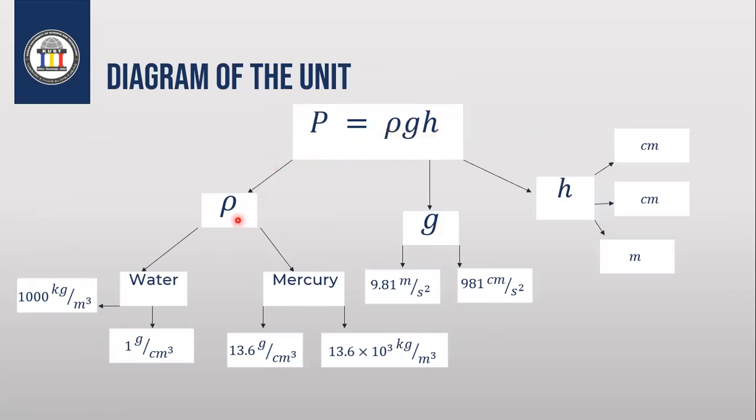First, ρ is the density of the material — specifically the density of liquid. We will use two types of liquid: water and mercury.